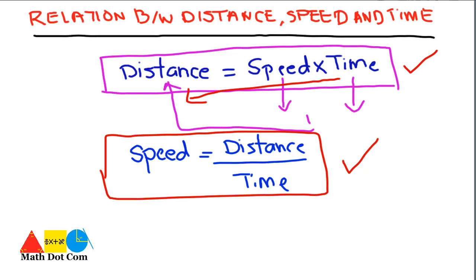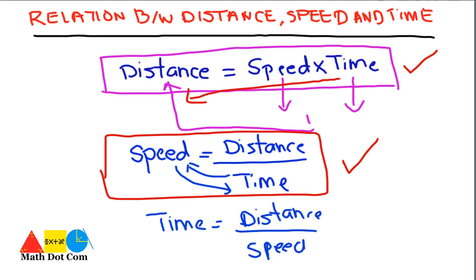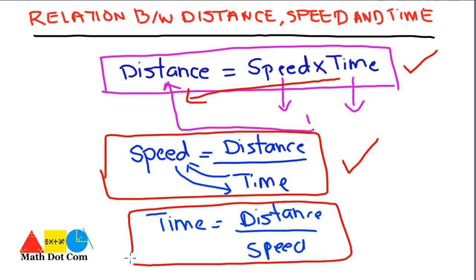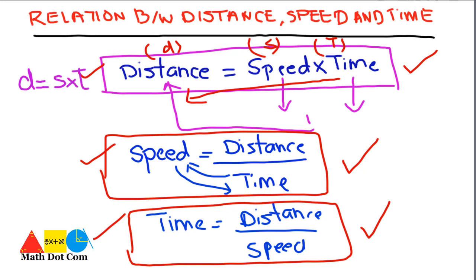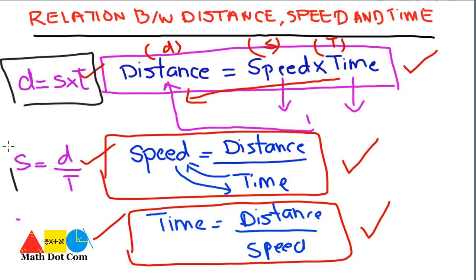If you want to find the time, then you will swap their positions and write: time is equals to distance over speed. The formula is only one — you just have to change their positions to calculate the required quantity. Distance can be represented by D, speed by S, and time by T. So the three formulas can be written as: D = S × T, S = D/T, and T = D/S.